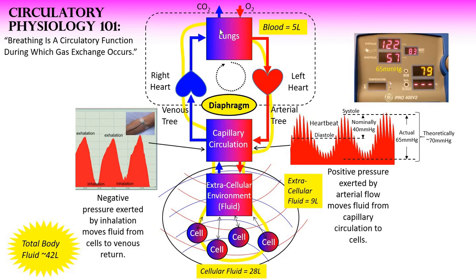During exhalation, blood empties from the lungs out the pulmonary vein into the left heart, and is there pressurized and distributed throughout the arterial tree and into the pervasive capillary circulation again — representing all of the organs of the body, including the head and brain.